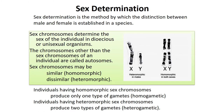Sex determination is the method by which the distinction between male and female is established in a species. We have two types of chromosomes: autosomes, called body chromosomes, and allosomes, which are sex chromosomes. Autosomes control body characters; allosomes control sex characters. Sex chromosomes determine the sex of the individual in dioecious or unisexual organisms.